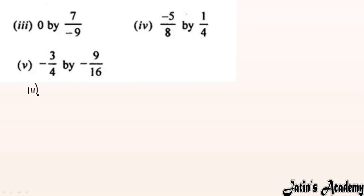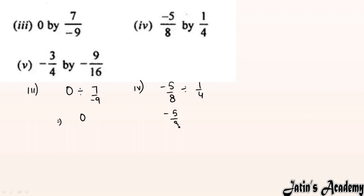Third part: 0 ÷ (7/minus 9). Zero divided by any term gives answer 0. Fourth part: minus 5/8 ÷ (1/4). Divide converts to multiply, next term takes reciprocal: 4/1. After cancellation — 4 and 8 simplify — answer is minus 5/2.